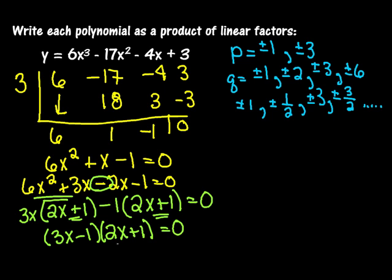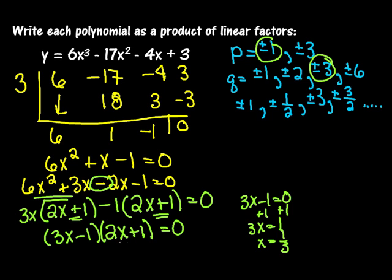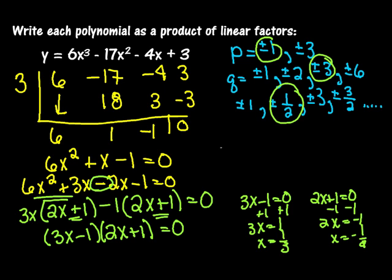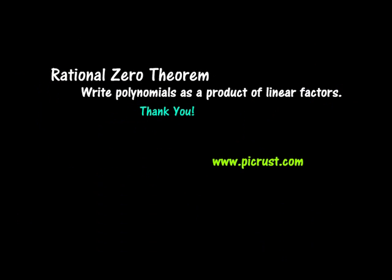Setting three x minus one equal to zero: adding one gives three x equals one, so x equals one third. Setting two x plus one equal to zero: subtracting one gives two x equals negative one, so x equals negative one half. Both of these appeared in our list of possible zeros. So written as a product of linear factors, we have y equals x minus three times three x minus one times two x plus one.